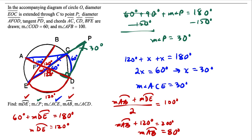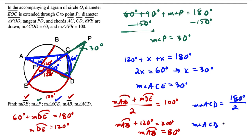For the last part, we want to find the measure of angle ACD. AFOD is a diameter, and angle ACD inscribes arc AED. Since this is a diameter, that arc is equal to 180 degrees. An inscribed angle equals half the measure of the arc it intercepts, so if it intercepts a 180 degree arc, we divide by two. The measure of angle ACD is 90 degrees, completing the last part.